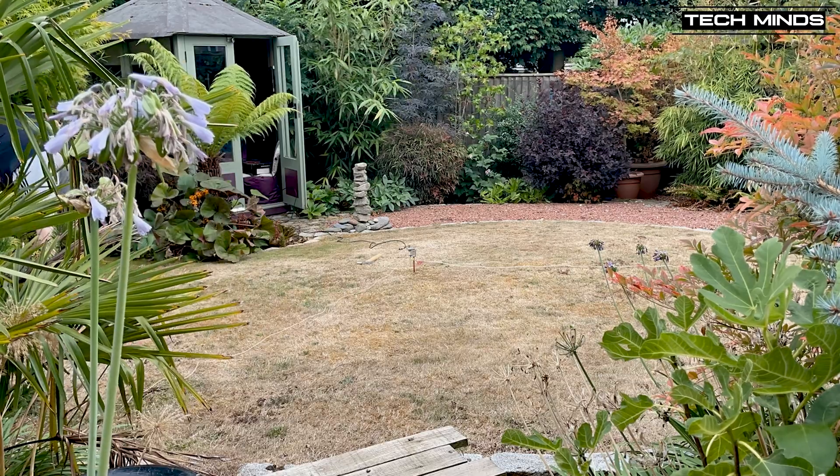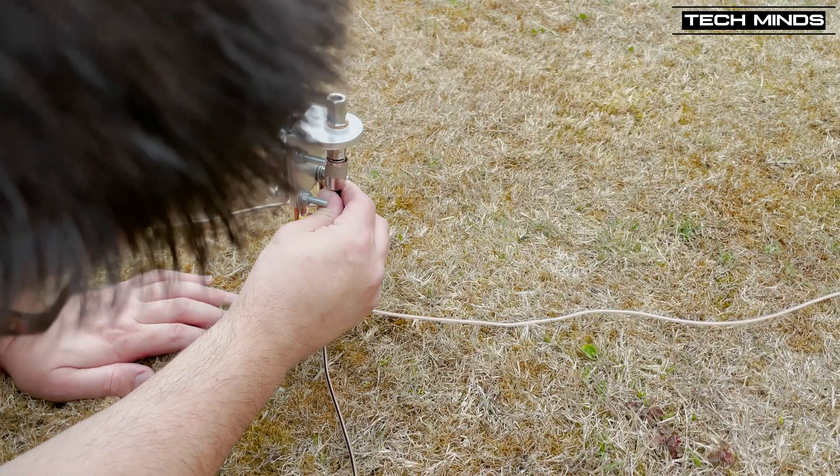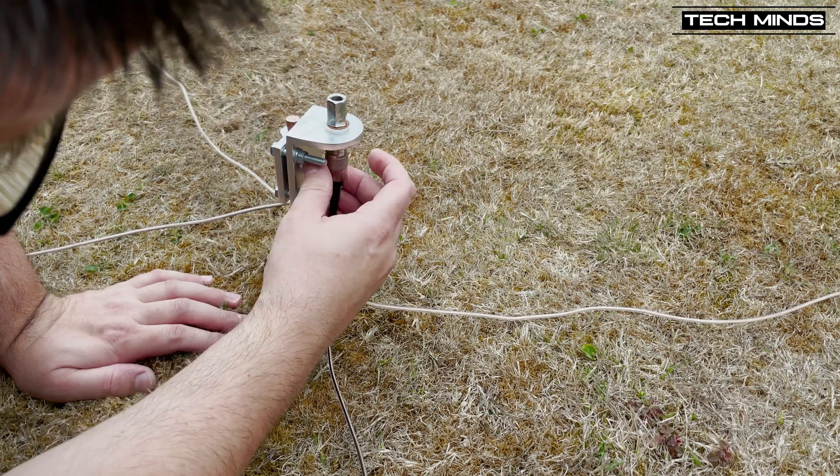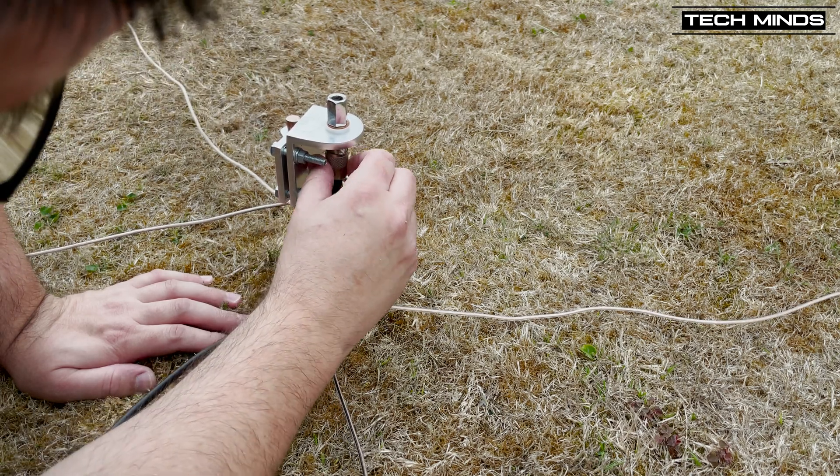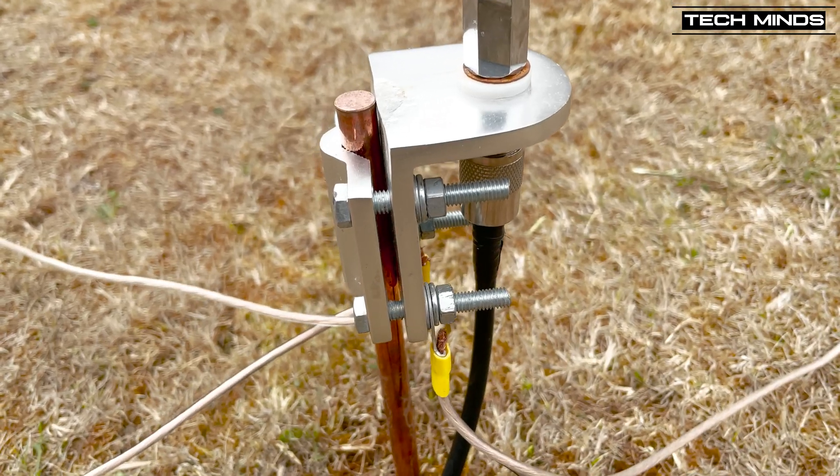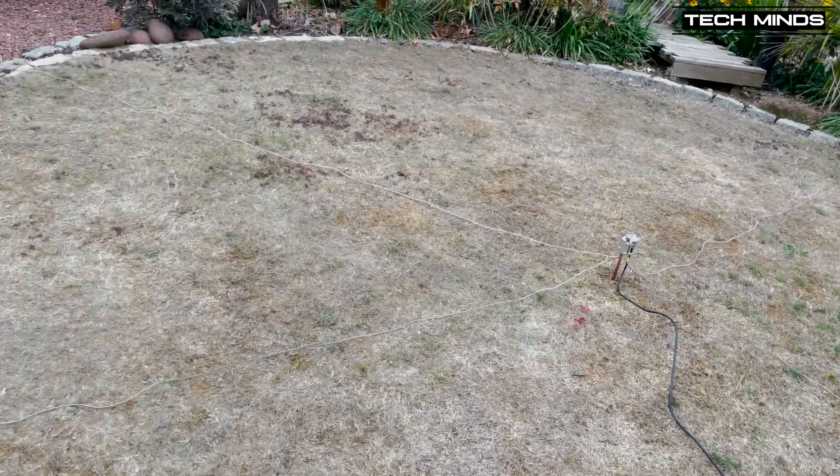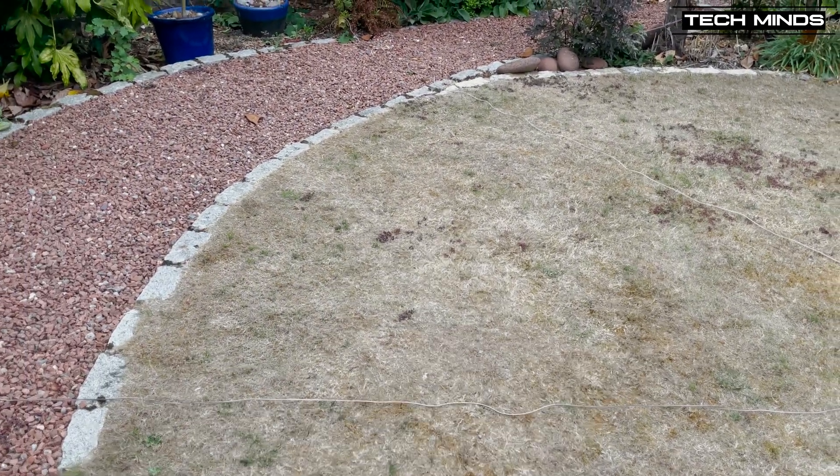I've attached four 5m ground radials, which are not included in the Ampro kit, and they're just attached to the bracket and then laid out across the garden in a cross configuration. I'm then connecting the coax patch cable to the Ampro mount, and then I'll just run that coax off to the summer house where I'll set up my G90 radio.